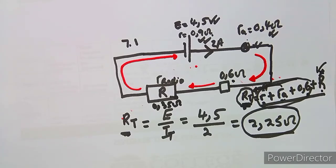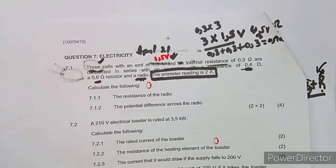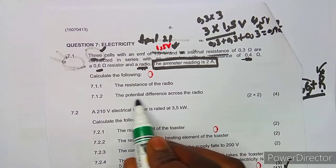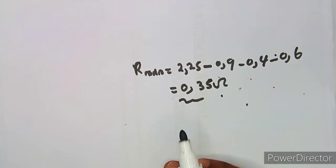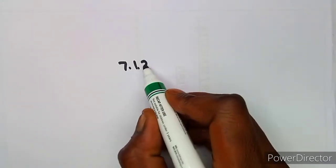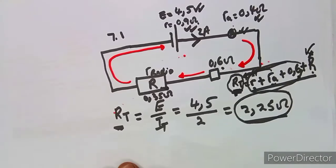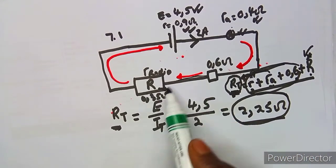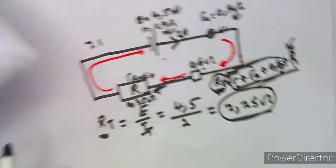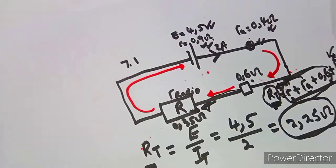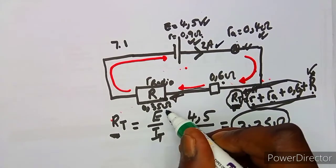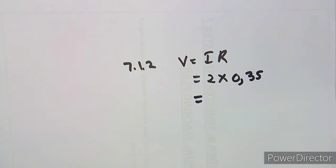These examiners are very clever in how they ask questions, and you need to be equally clever in how you answer them. For question 7.1.2, we calculate the potential difference across the radio. Since current is the same in a series circuit, V = I × R = 2 amps × 0.35 ohms.